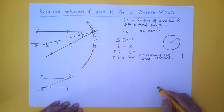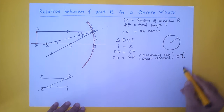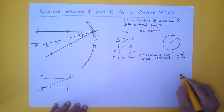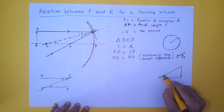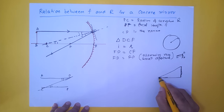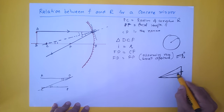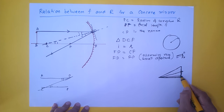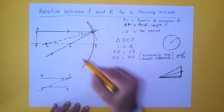Now, assuming a very small aperture of the mirror, FD ≈ FP. The mirror is extremely small in aperture, so FP and FD are nearly equal. To illustrate: in a right-angle triangle, if the height is large there is a substantial difference between the hypotenuse and the base, but as the height becomes very very small, those two lengths become nearly equal. So for a small-aperture mirror, FD = FP.